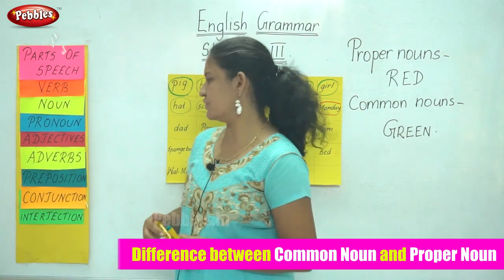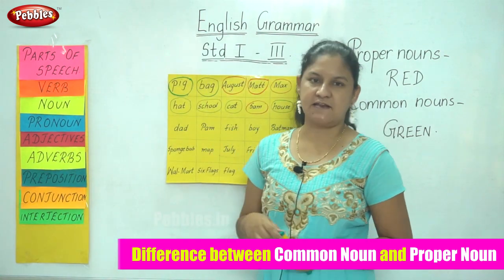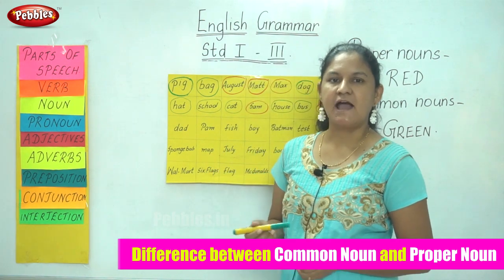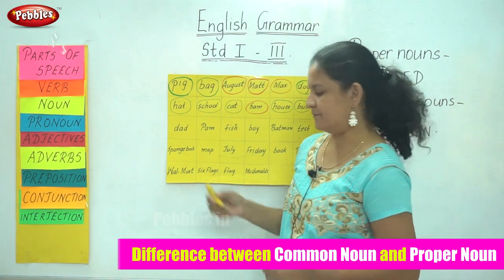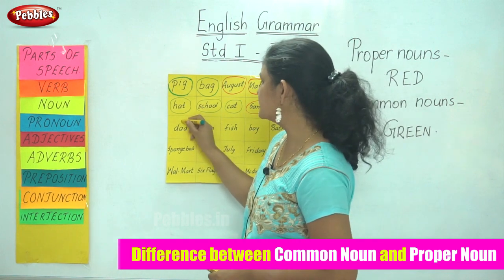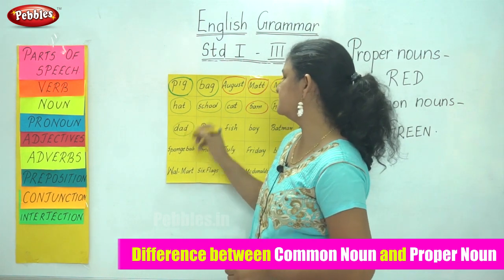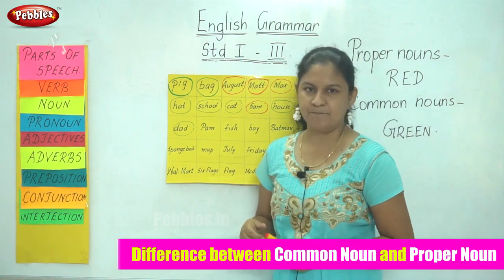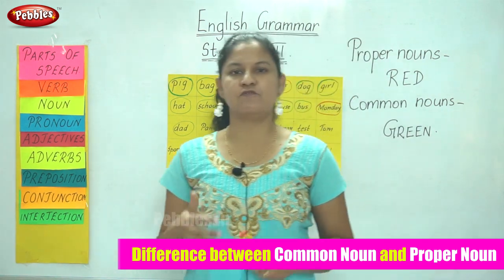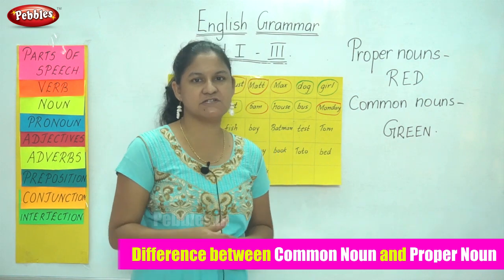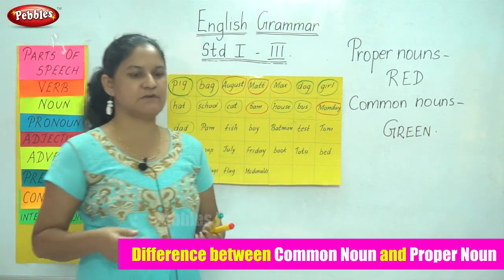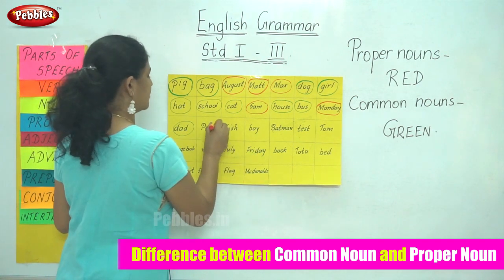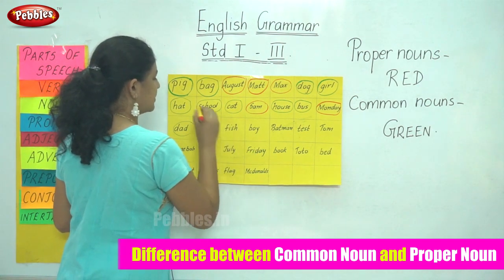Moving to the next word, we have dad. Dad is the name of a person and is a common noun, so I use my green to circle the word dad. The next word is Pam. Pam is the name of a particular or specific person and starts with a capital letter, so I circle the word Pam in red because it is a proper noun.